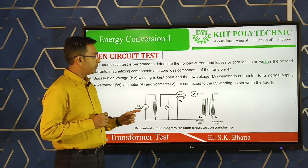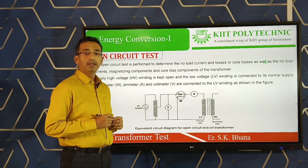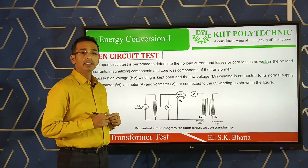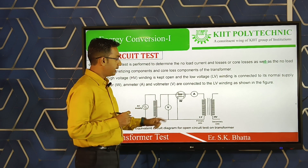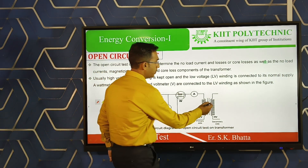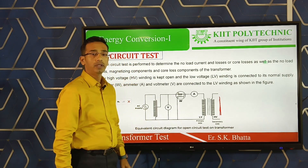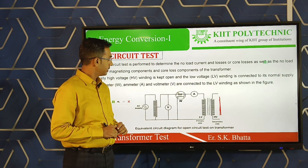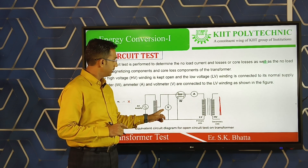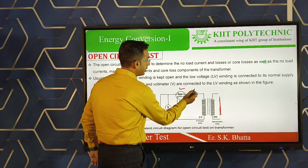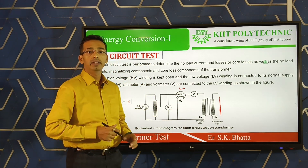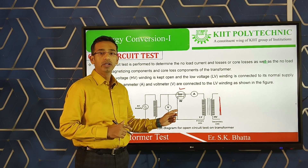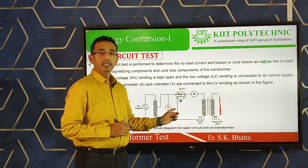Looking at the diagram, this is a single-phase transformer. The primary side is the LV side (low voltage side) and the secondary side is the HV side (high voltage side). As the name suggests, in the open circuit test the secondary HV side is left open. On the primary LV side, instruments are connected: a voltmeter in parallel, a wattmeter, and an ammeter in series.